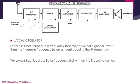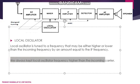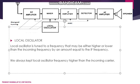The local oscillator is tuned to a frequency that may be either higher or lower than the incoming frequency by an amount equal to the intermediate frequency. However, we always keep the local oscillator frequency higher than the incoming carrier. Why it is always kept higher is an important topic, which we will discuss in the next session.